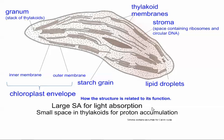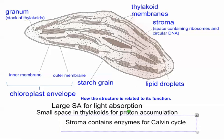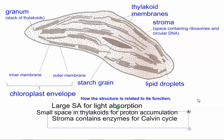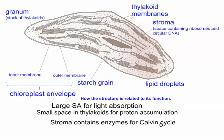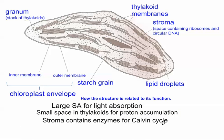The stroma is filled with enzymes used for the Calvin cycle, the most famous of which is RuBisCO. RuBisCO is the enzyme that catalyzes the reaction of fixing carbon — it combines carbon with RuBP and then continues to feed through the rest of the Calvin cycle.